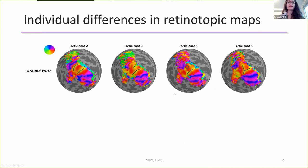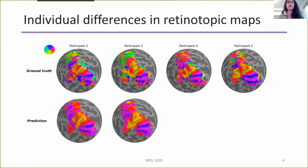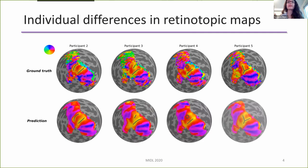We noted great differences in polar angle maps across participants, particularly in the dorsal portion of the early visual cortex, as you can see here, represented by these gray lines. So we wondered whether our model would be able to predict these unique patterns. And as you can see here, our model was able to predict each of these unique patterns, even this white Y-shaped representation of the lower vertical meridian, shown by these yellow lines here.